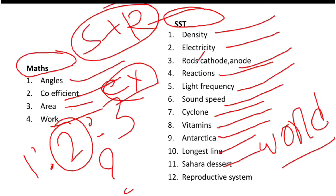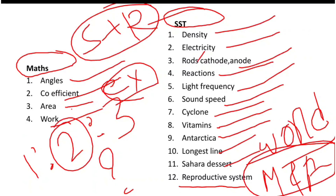Next is the Reproductive System — both the Male and Female Reproductive System. This covers one or two questions. This is the size and social studies overall topics.